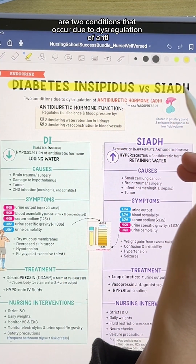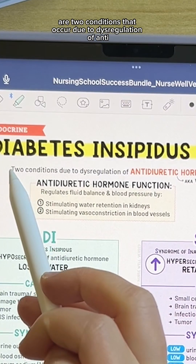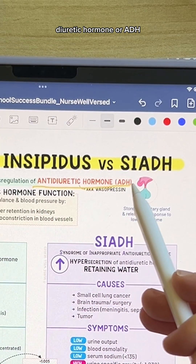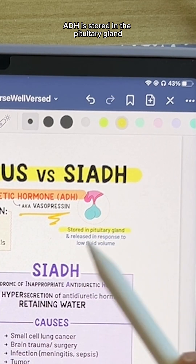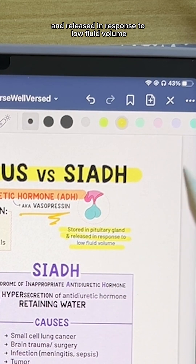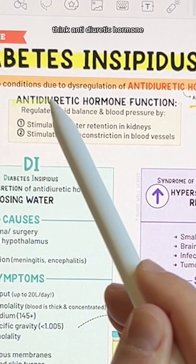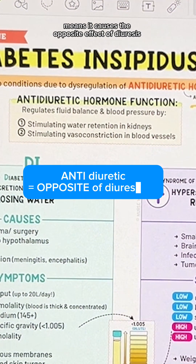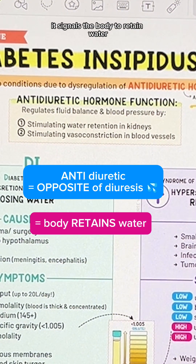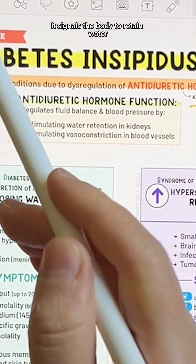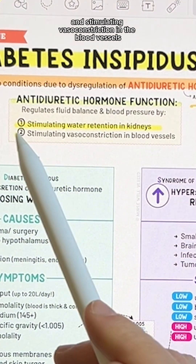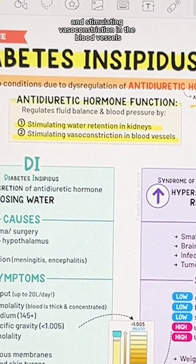Diabetes insipidus and SIADH are two conditions that occur due to dysregulation of antidiuretic hormone, or ADH. ADH is stored in the pituitary gland and released in response to low fluid volume. Antidiuretic hormone means it causes the opposite effect of diuresis, meaning it signals the body to retain water. It does this by stimulating water retention in the kidneys and stimulating vasoconstriction in the blood vessels.